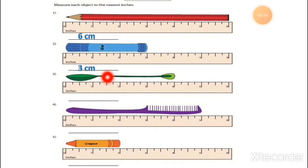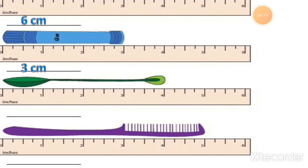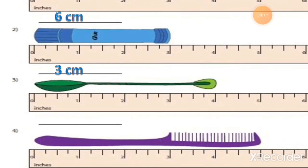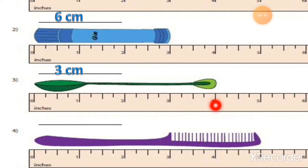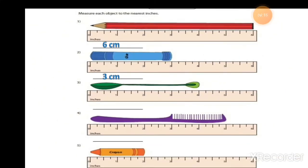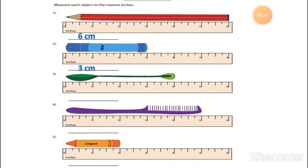The next one, number 3, is a spoon. You can see on the screen — I will zoom the screen. We start measuring from 0 and it ends at number 4, so the spoon is 4 cm long. You have to write it this way: the spoon is 4 cm long.